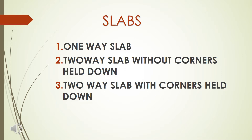Here we are looking at two types. In the two-way slab without corners held down, the corners are not subject to torsional force, so we are not providing torsional reinforcement. In the two-way slab with corners held down, we are providing torsional reinforcement at the corners.